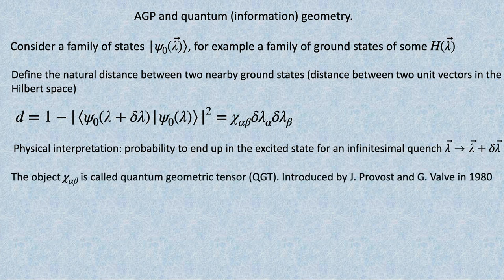This object is called the quantum geometric tensor, and it was introduced by Provost and Vallee in 1980. It's interesting that if you read their paper, they basically say this is an abstract object unrelated to measurements, but it's still interesting to study. And yet this object now appears everywhere.